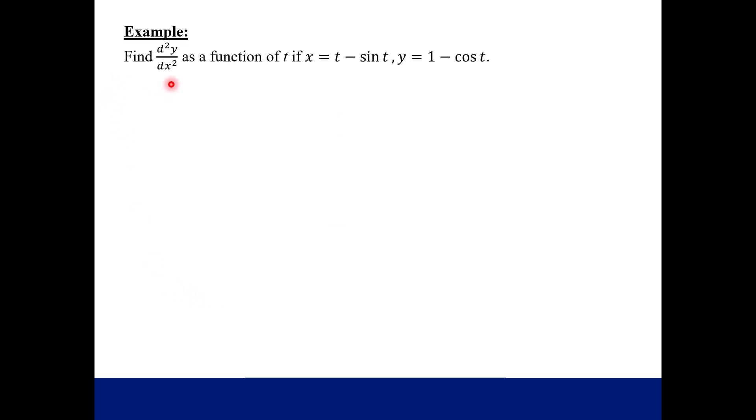So example: find the second derivative of y with respect to x as a function of t, if x is t minus sine t and y is one minus cosine t. So this is the parametric equations that define our curve in space and our parameter or input is t.